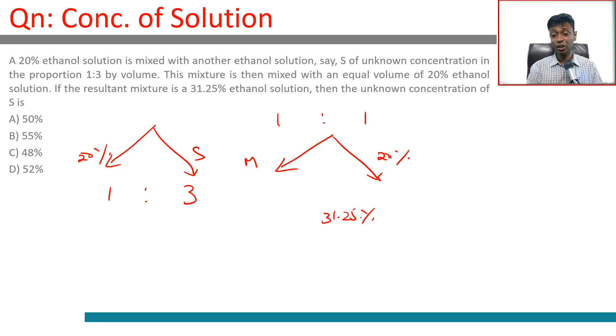This mixture which is formed is mixed in equal ratio to get 31.25. So think about this - forget about the first part, deal only with this mixture. This and 20% are mixed to get 31.25, they are mixed in equal quantity.